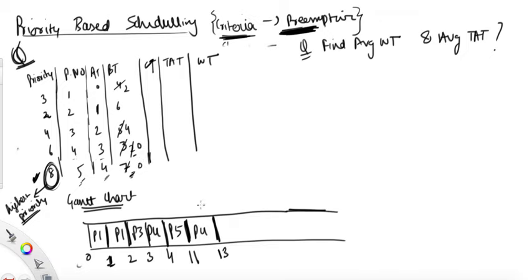Now P3 — it requires four units of time, so execute for four units of time. Now, P2 or P3? P1, sorry — P1 has higher priority, so execute P1. For how much? For two units of time — that brings us to nineteen.